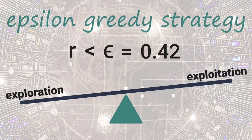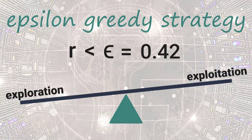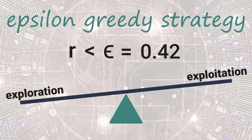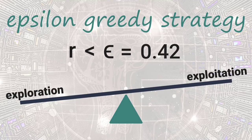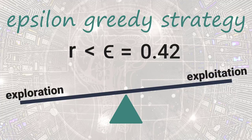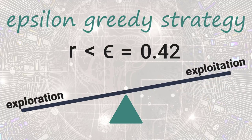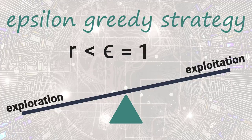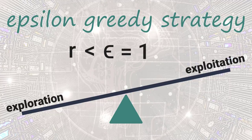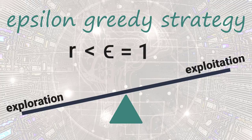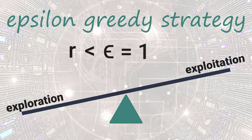Recall, we first started talking about the exploration-exploitation tradeoff because we were discussing how the lizard should choose its very first action since all actions have a Q-value of 0 at the start. Well now, we should know that the action will be chosen randomly via exploration since the exploration rate is set to 1 initially — meaning with 100% probability, the lizard will explore the environment during the first episode of the game rather than exploit it.